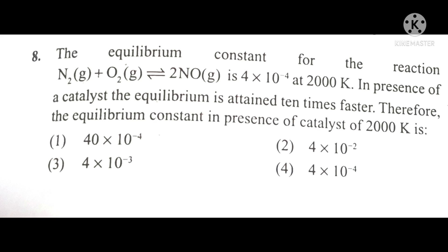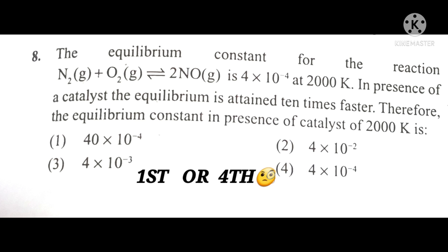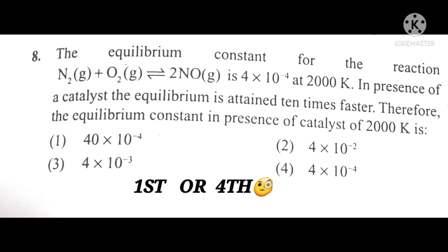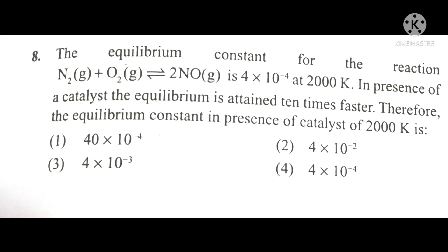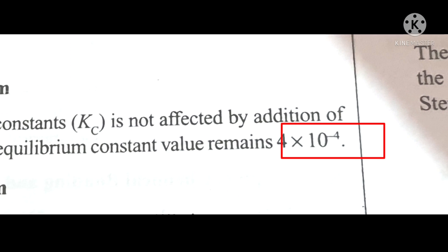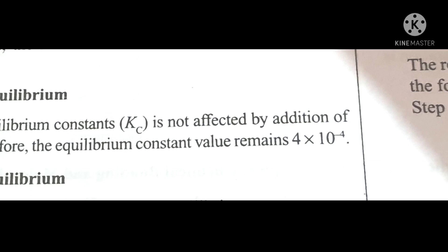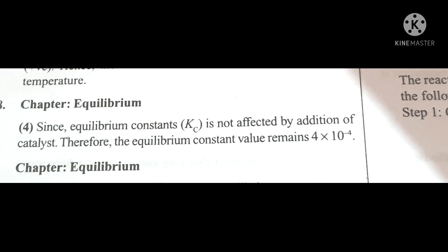In this question, option first and option fourth can be the answer because the probability of 10 power minus 4 being similar from the end. To decide the correct answer, we take the help of other options. In the other options, 4 is being repeated more, so this helps us find our answer. Therefore, the fourth option will be the correct answer. You can verify your answer here.